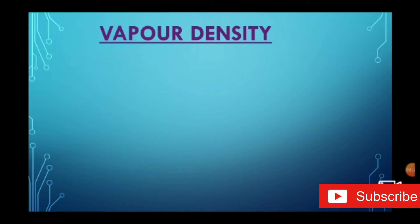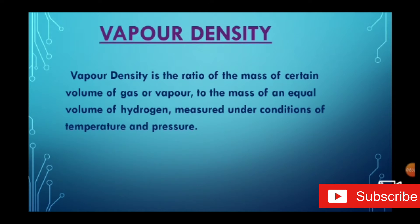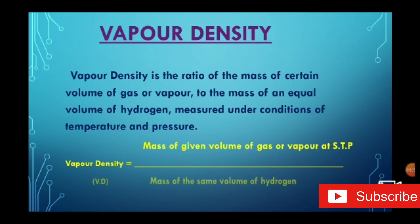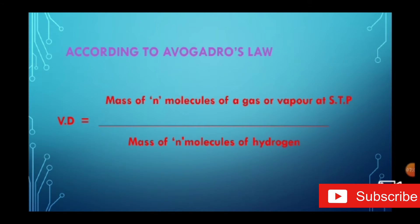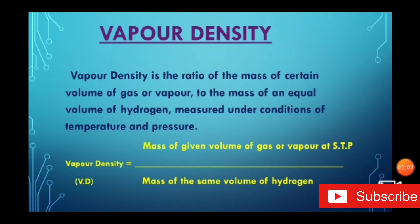Before deriving the relationship, what is meant by vapour density? The vapour density is the ratio of the mass of a certain volume of gas or vapour to the mass of an equal volume of hydrogen measured under the same conditions of temperature and pressure. We compare the volume of all gases to hydrogen gas because hydrogen is the lightest gas.